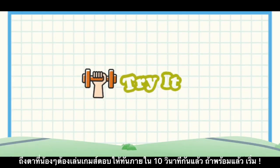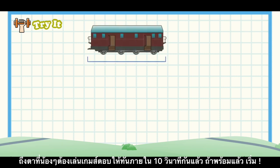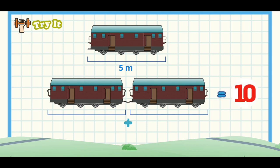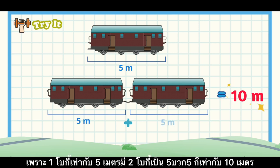Here comes the quiz! Try to answer before the time is up. Are you ready? Let's go! Great job everyone! That's right — the answer is 10 meters. The length of one train carriage is 5 meters long. Since there are two carriages, the total length is 5 plus 5, or 10 meters long.